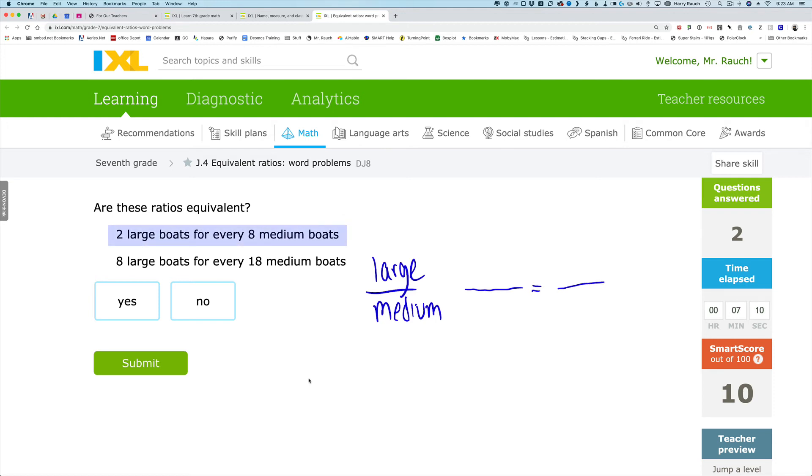So once again, we have two large to eight medium being compared to eight large and 18 medium boats.